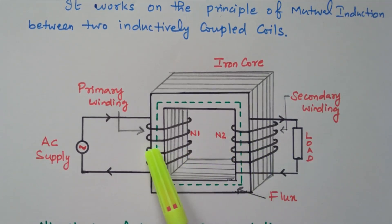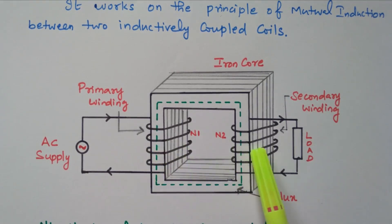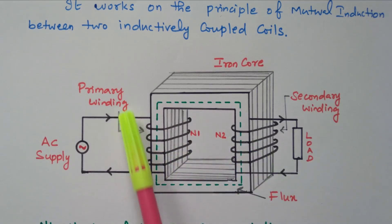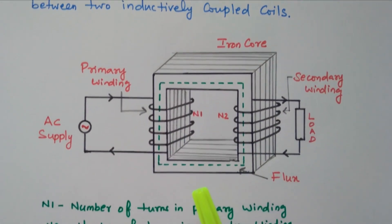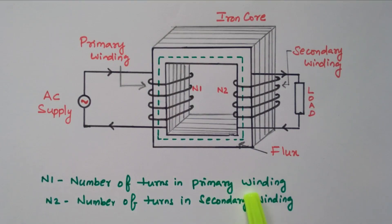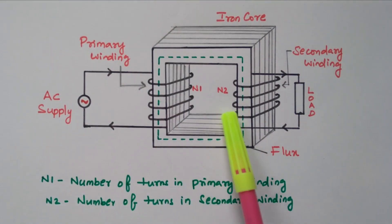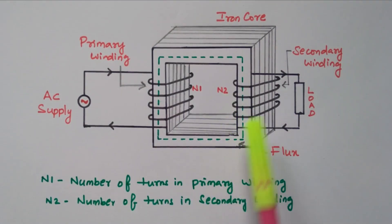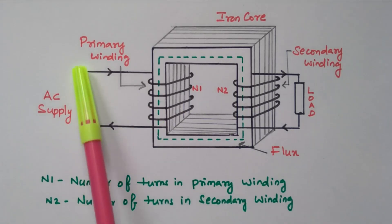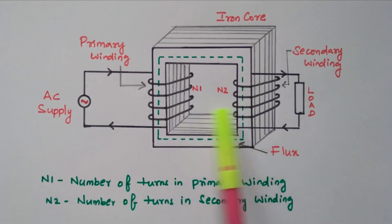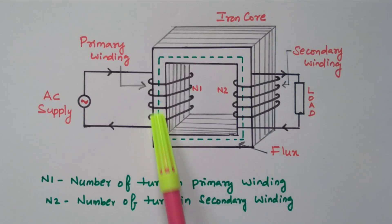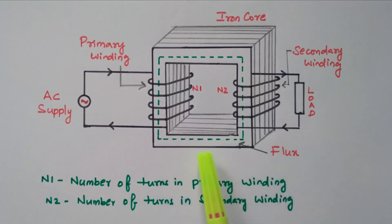It is a fully laminated iron core over which the coils are wound. There are two different windings: primary winding and secondary winding. There is mutual inductance between the primary and secondary winding. N1 is the number of turns in the primary winding, and N2 is the number of turns in the secondary winding. AC supply is given to the primary winding, and the load is connected to the secondary winding. There is no direct contact between primary and secondary winding — they are connected only through mutual inductance.